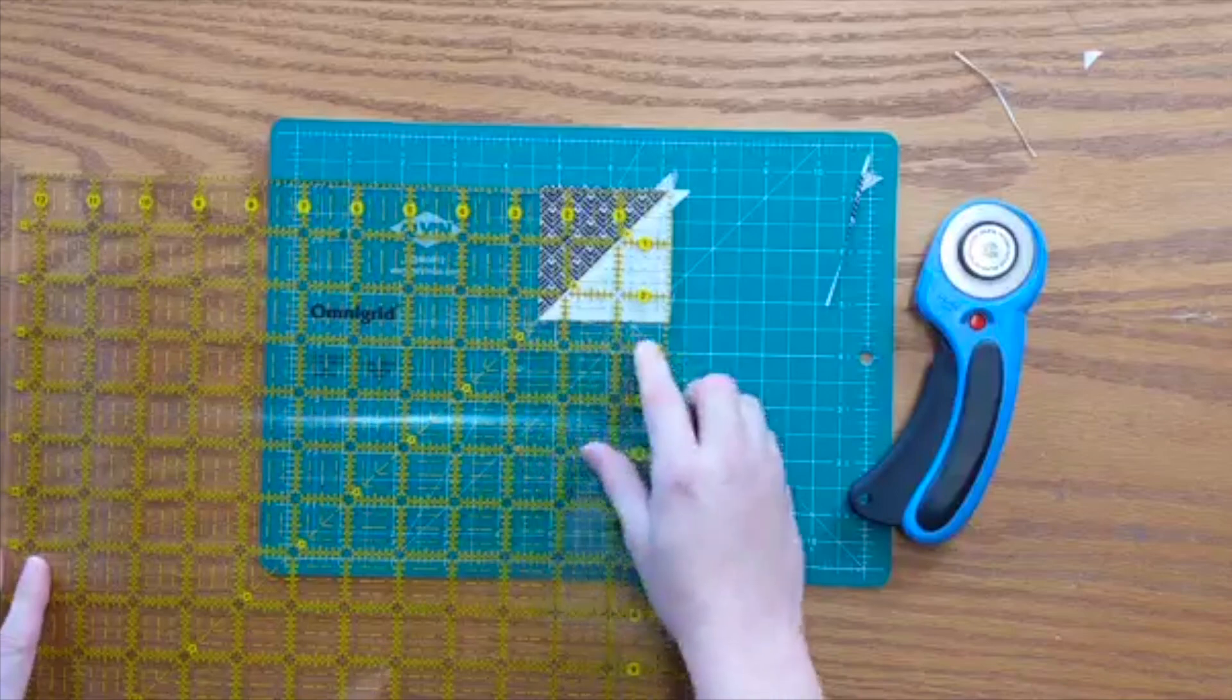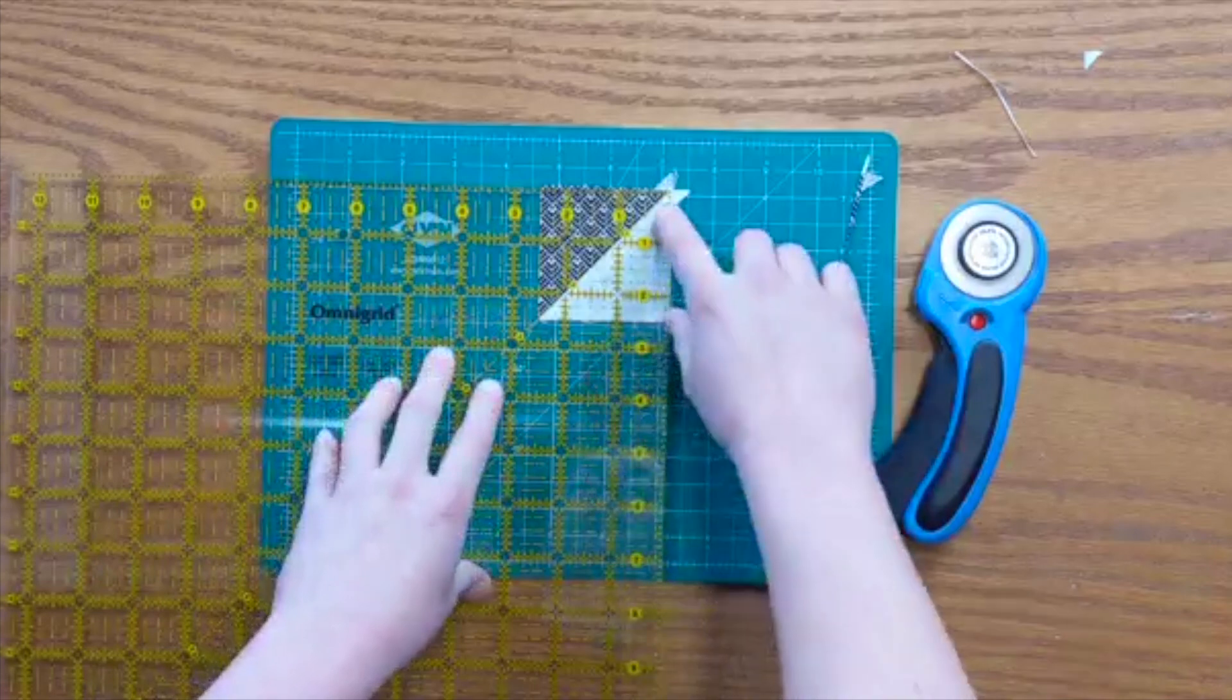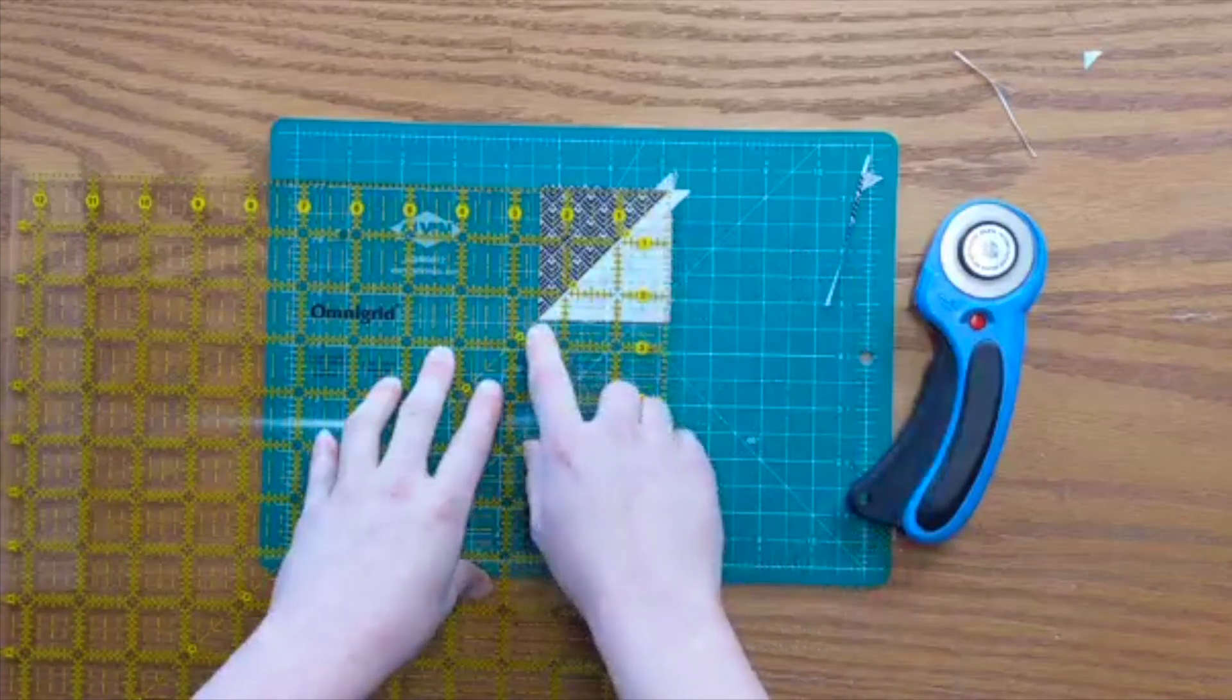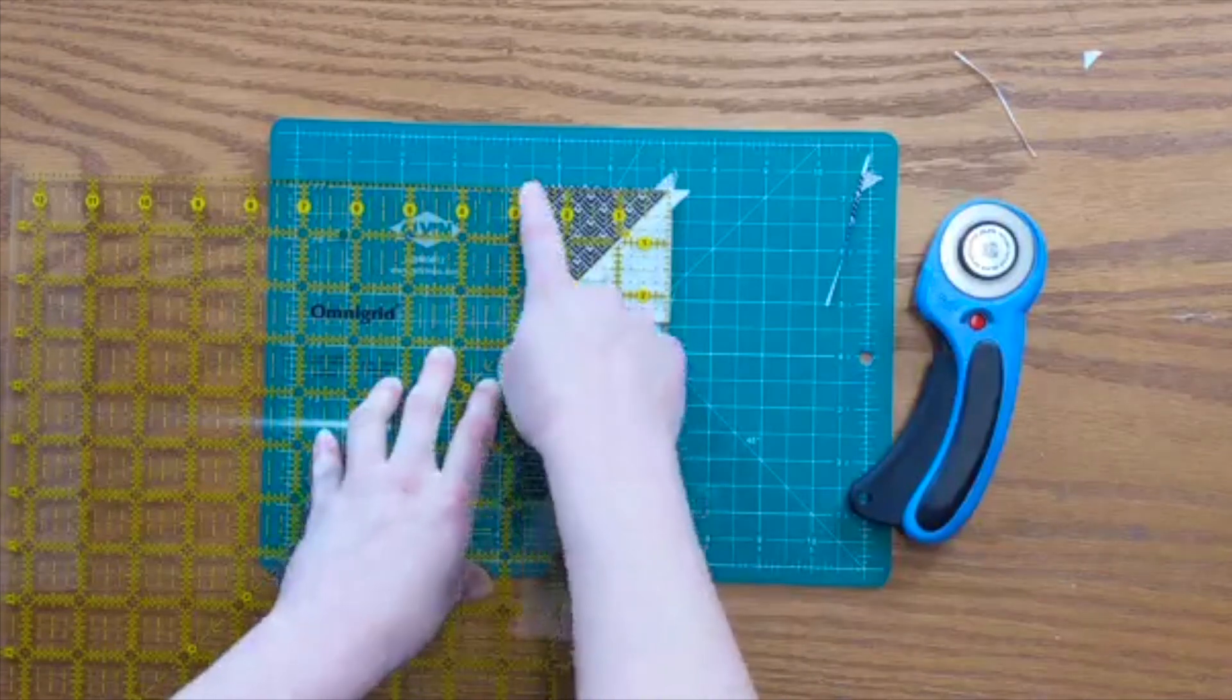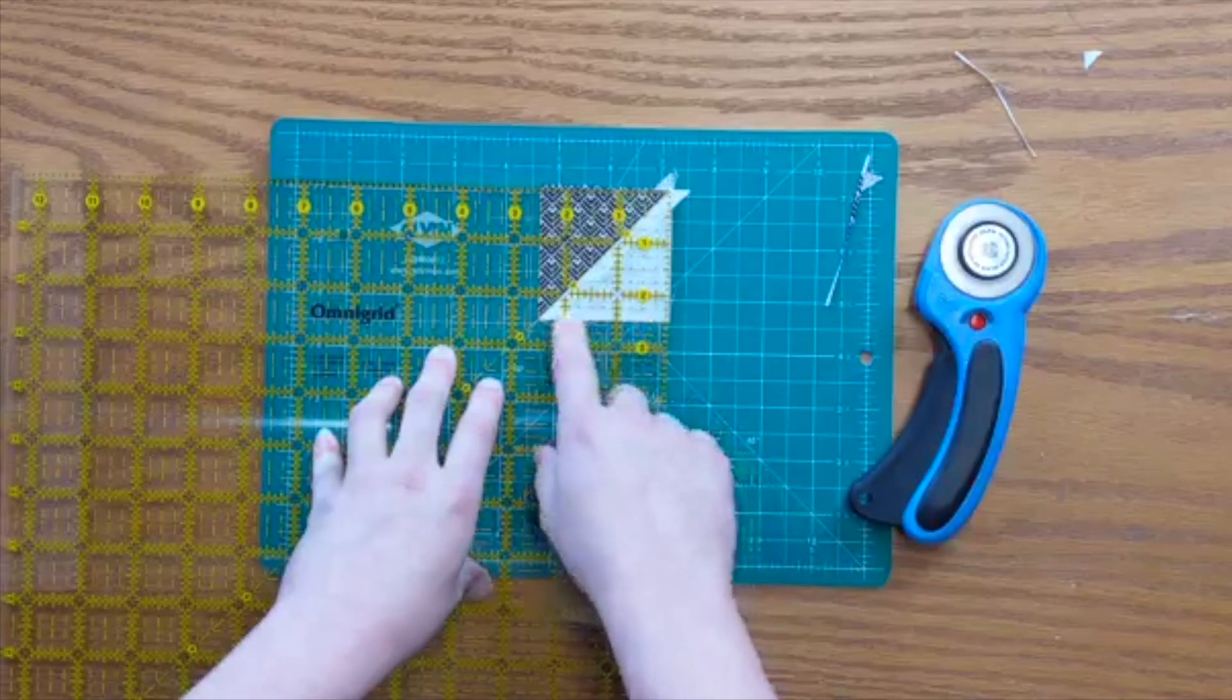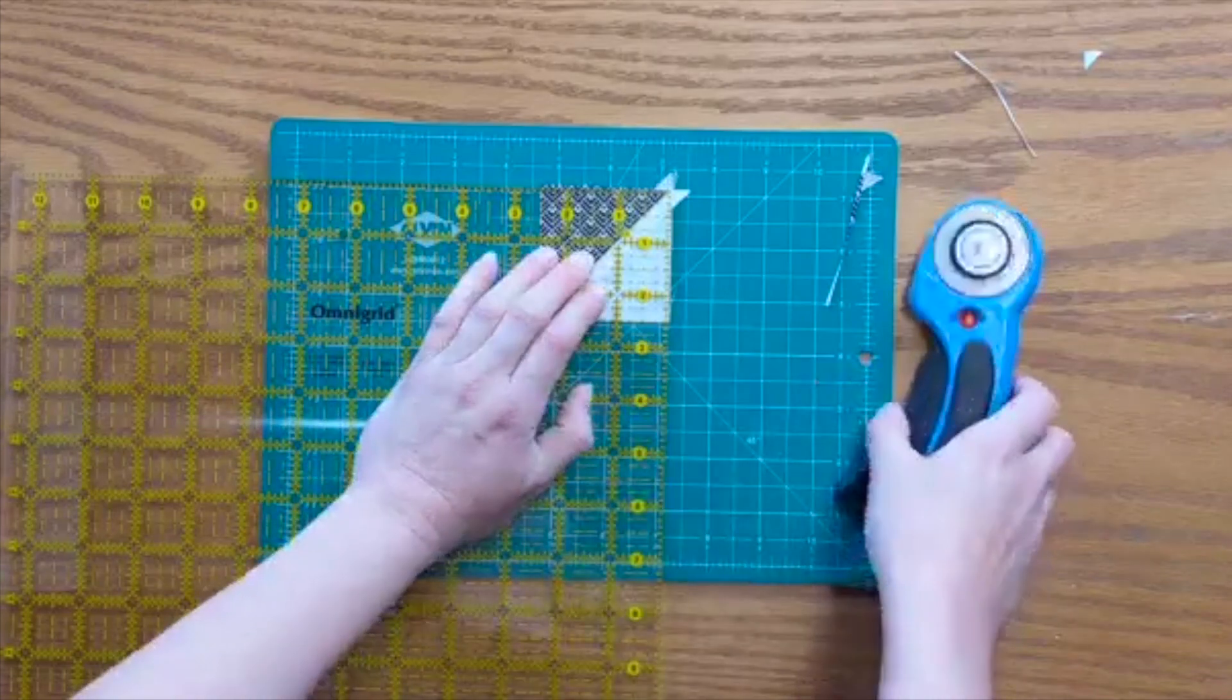Two and a half inches. We're going to line it up with our half square triangle and you'll notice that now the two and a half inch line all the way across perfectly matches that point. We've got a beautiful two and a half inch square line. We're going to make sure that all lines up and then we're going to go ahead and trim.